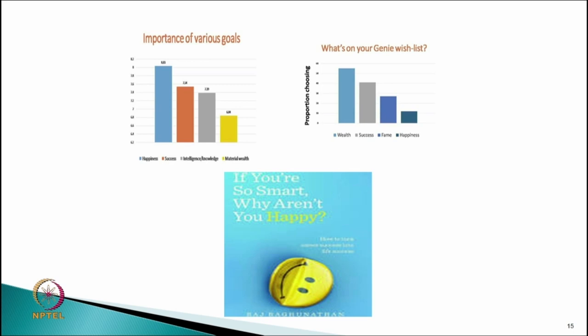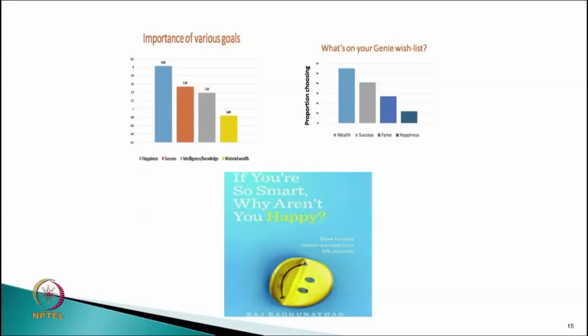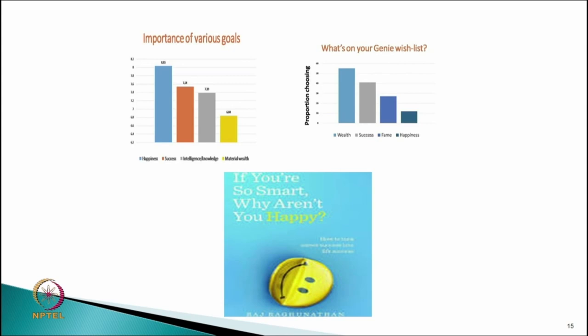Dr. Raj Raghunathan wrote an interesting book, 'If You Are So Smart, Why Aren't You Happy?' In his research, he observed that when we talk about priorities in action or our wish list, our responses are different. He had two questions: one about priority in action and another about the importance of various goals. When we look at action or wish lists, we give topmost priority to wealth, then success, then faith, and then happiness. On the other hand, when we rate importance without action context, the topmost factor is happiness, then success, then intelligence, and then mental health.